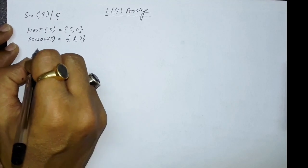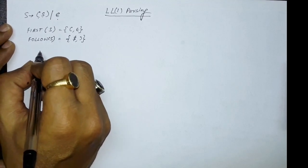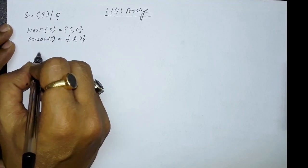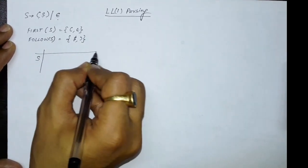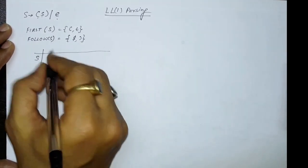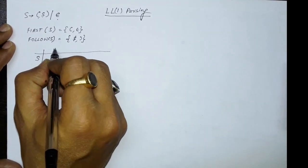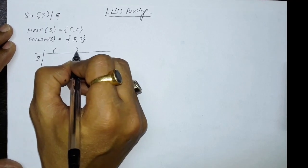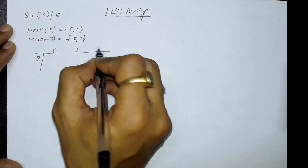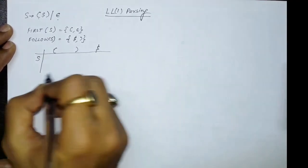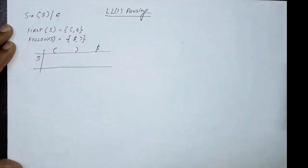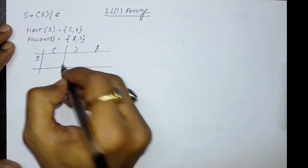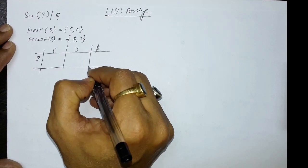Now let us draw the LL1 parsing table. For the LL1 parsing table, on the row side we write the non-terminal symbols, and on the column side we write the terminal symbols, which are opening bracket, closing bracket, and dollar.